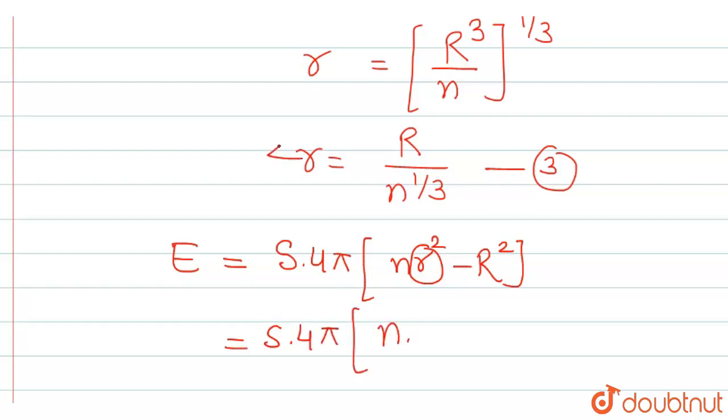Now if we are using the square, this is r square is equal to capital R square upon n raised to 2 by 3, taking the square of all 3 terms. This is capital R square upon n raised to 2 by 3 minus capital R square.